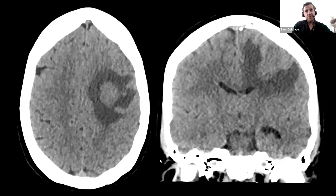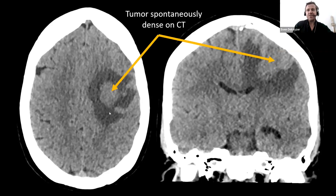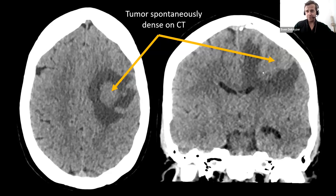What does a central nervous system lymphoma look like? On an unenhanced CT, we see a tumor that is isodense compared to the cerebral cortex, surrounded by hypodense edema. This increased density of the tumor is a very characteristic finding in CNS lymphoma — the density is exactly the same as the normal cerebral cortex.